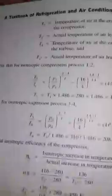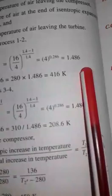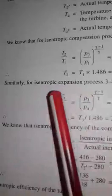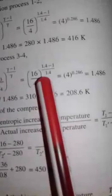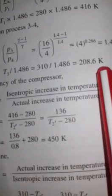For the isentropic compression process, T2/T1 = (P2/P1)^((γ−1)/γ). Putting in the values, we get the ratio T2/T1 = 1.486. Similarly, for the isentropic expansion process 3 to 4, T3/T4 = (P3/P4)^((γ−1)/γ), also giving 1.486. From this, we calculate T4 by putting in the value of T3 = 310 K, giving T4 = 208.6 K.